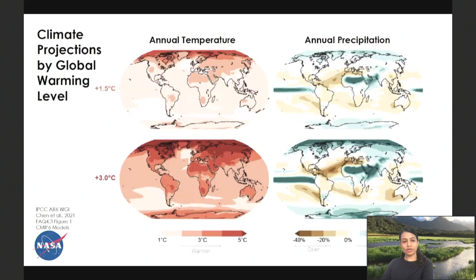Climate projections by global warming level show annual temperature and annual precipitation. The first scenario shows 1.5 degrees C of warming, and the one below shows 3.5 degrees C of warming. In each scenario, we see regional patterns: dry regions get drier and wet regions get wetter on the precipitation map. However, it's not consistent globally — some regions are definitely feeling the impact more than others.